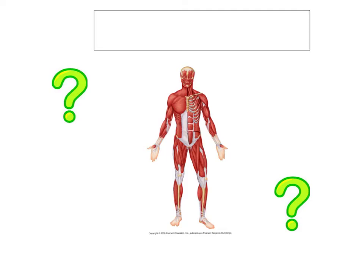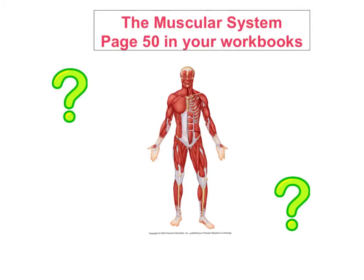Now we're up to lesson two. We've done the skeletal system, so now we're going to look at the muscular system. Turn to page 50 in your workbooks. As in the first video, I'd like you to pause this video and get a piece of paper and write down all the names of the muscles that you can recall from last year that are in the human body.